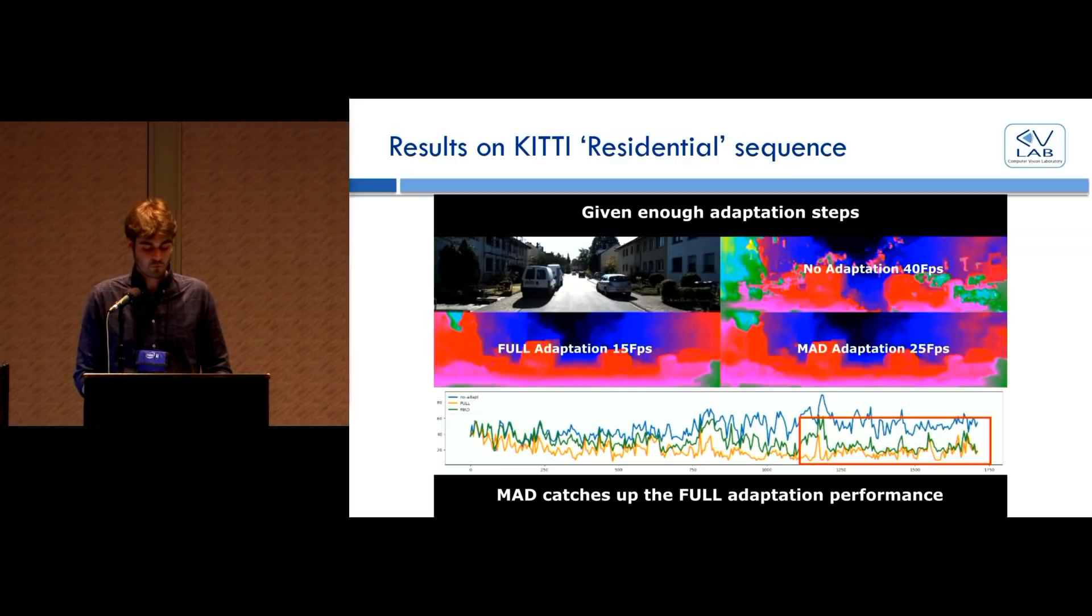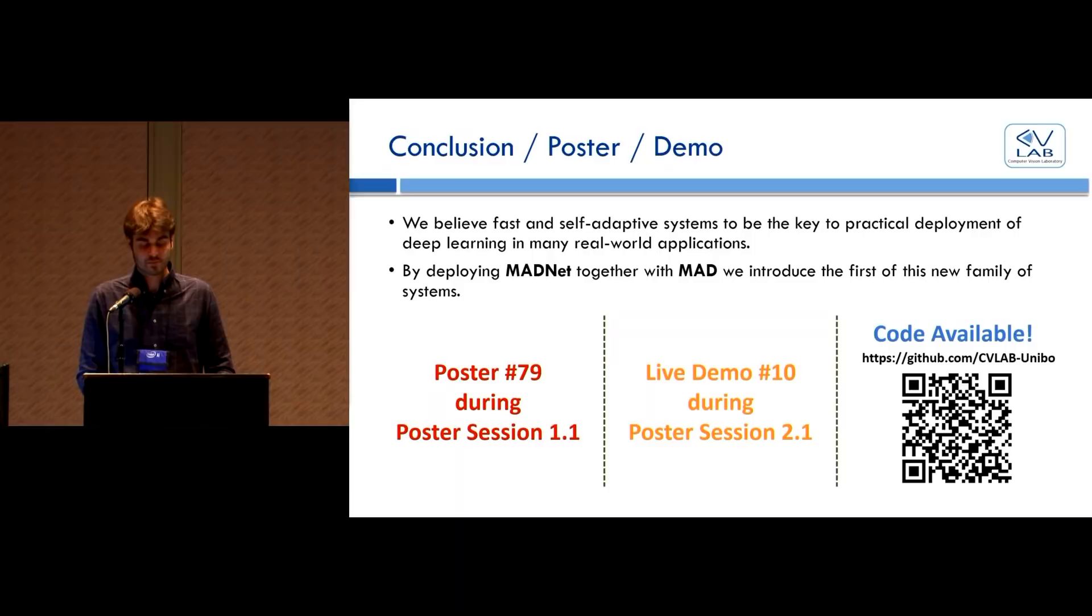We strongly believe that fast and self-adaptive machine learning systems are the key for a more widespread diffusion of this kind of system in real applications. MADNet together with MAD provides this capability for stereo-based depth estimation. All our code is already available on GitHub, and we have a poster number 79 and a live demo number 10 tomorrow. Thank you.